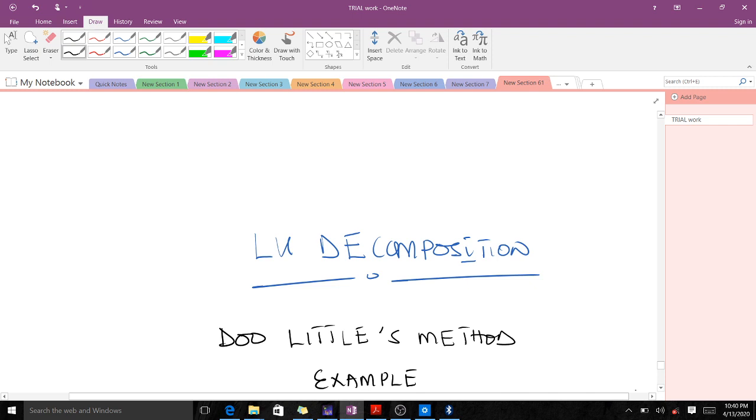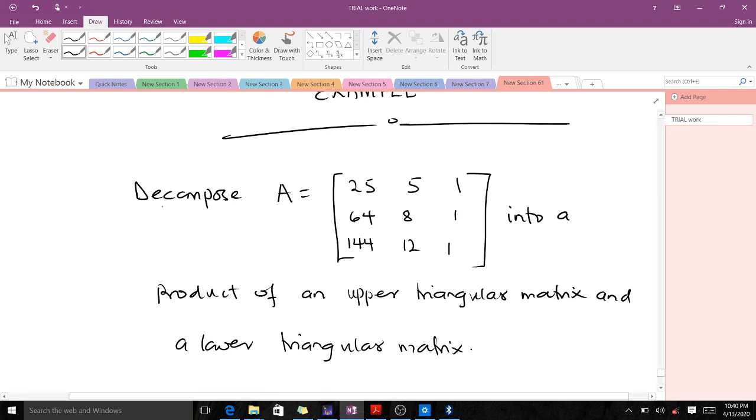Note that in our previous lesson, we were introduced to the Doolittle method and how to derive the formula for it. The example is decompose this particular matrix A into a product of an upper triangular matrix and a lower triangular matrix, so it should be LU. Lower shall come first and upper shall come second here. We are using Doolittle's method.